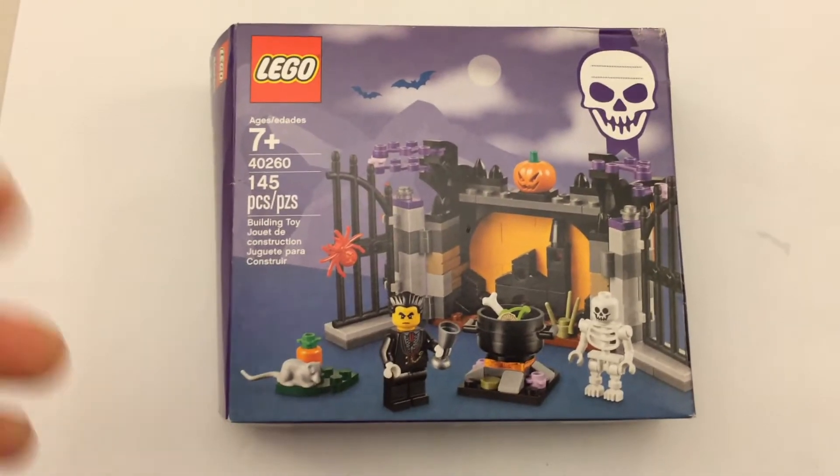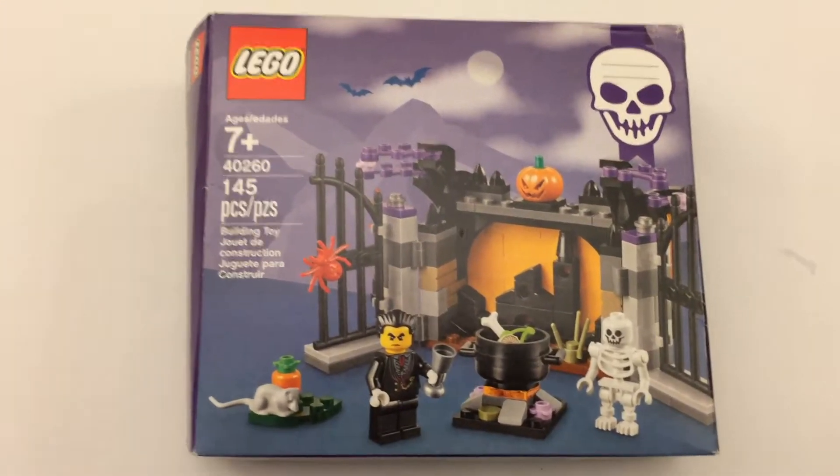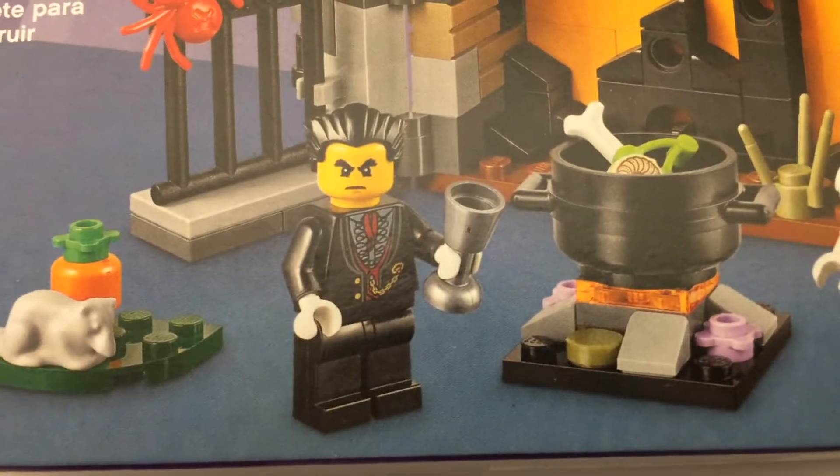It has 145 pieces and is recommended for ages 7+. As we can see, we have a little rat there, and then we have a vampire guy. I'm assuming it's supposed to be a vampire. And then we have a skeleton there.